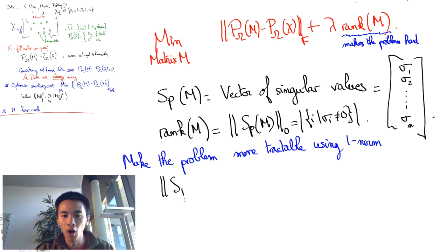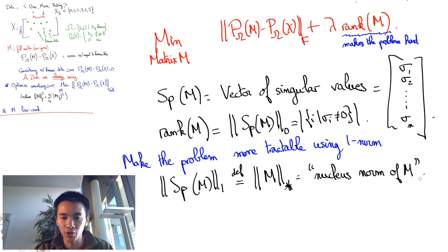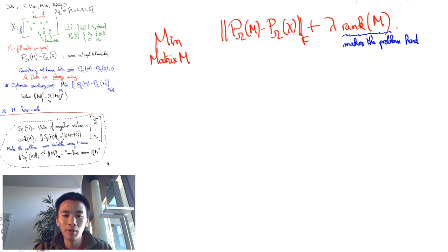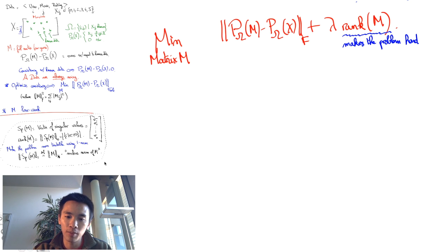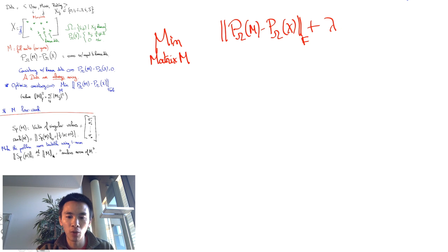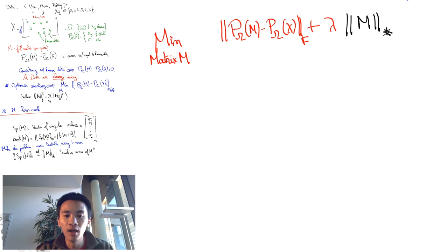In any case, the one norm of the vector of singular values of the matrix M is called the nuclear norm of M. Given this, we finally have a much more tractable version of our optimization problem. We'll want to minimize the trade-off between the Frobenius norm of the difference between our matrix completion and the available data and the nuclear norm of our matrix completion.